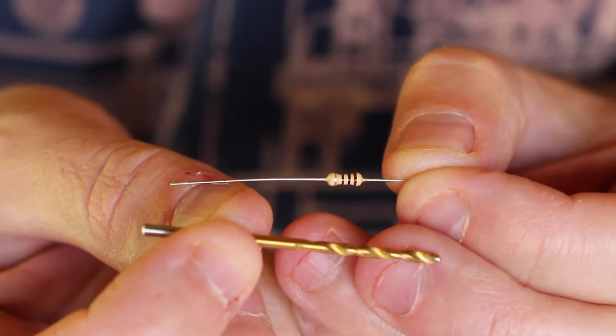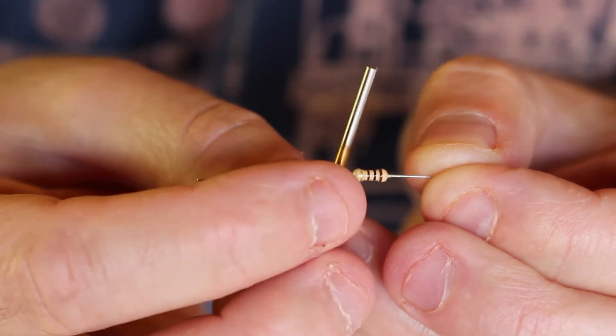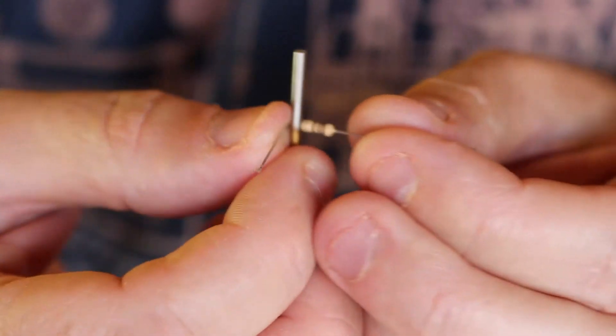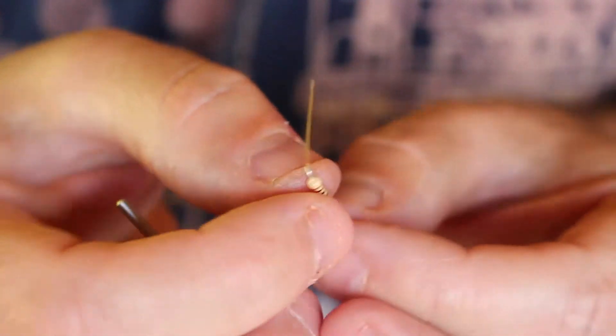The way I do the resistors is use like a 2mm drill and I just bend the legs around the drill to keep them nice. That gives a nice radius so you won't snap the legs off.